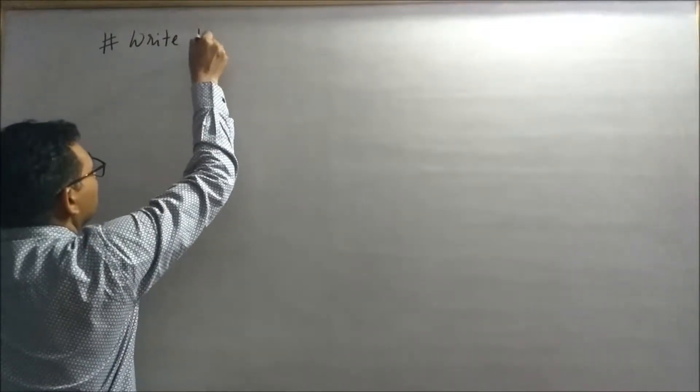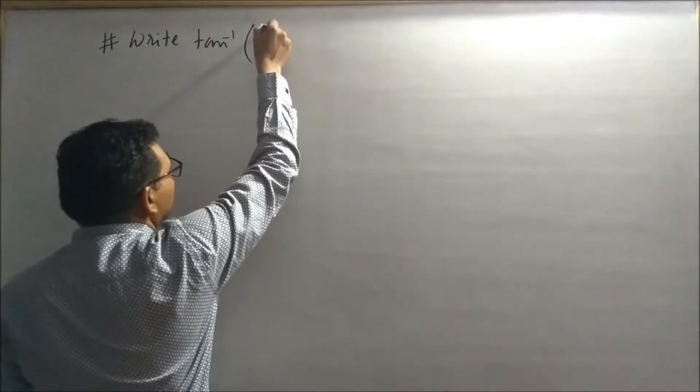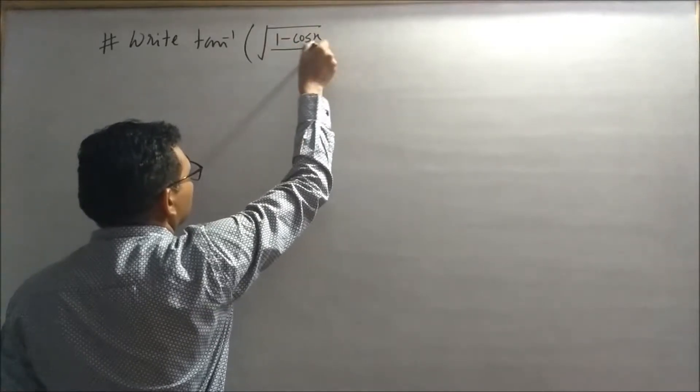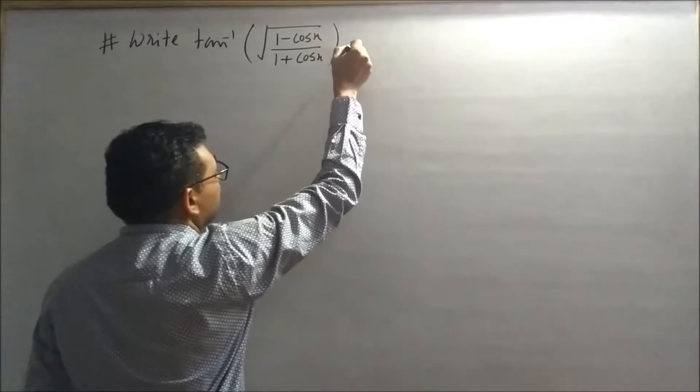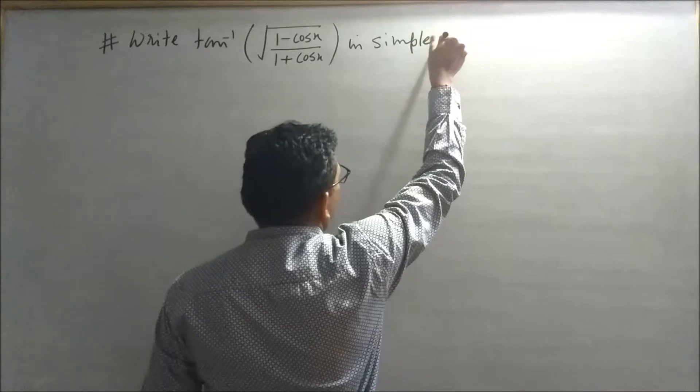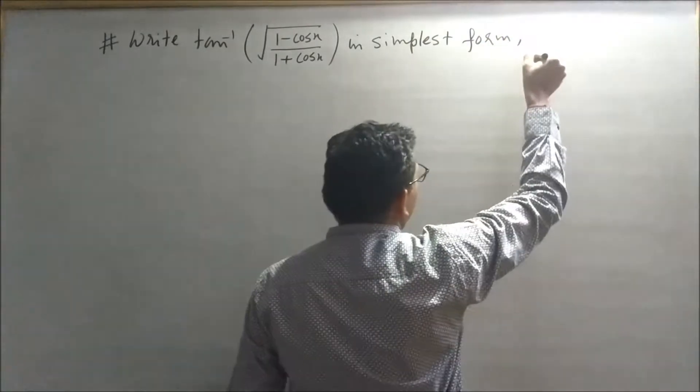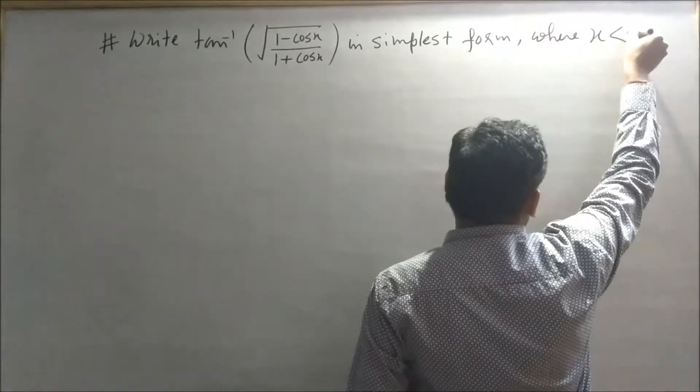Write tan inverse of square root of (1 minus cos x) upon (1 plus cos x) in simplest form, where x is less than pi.